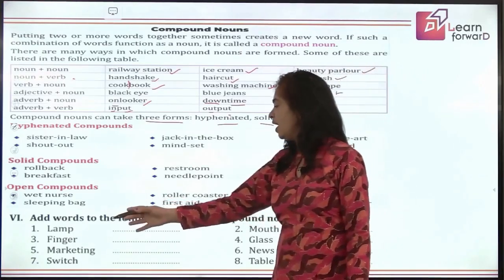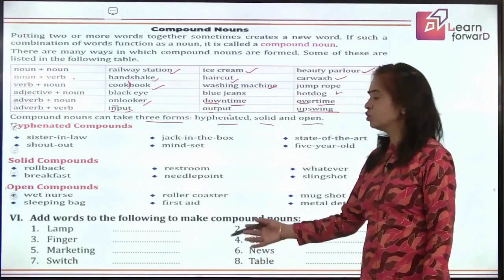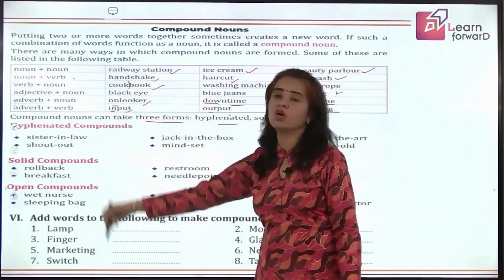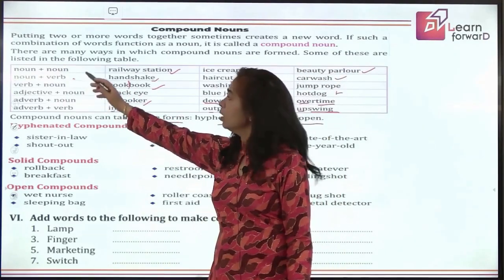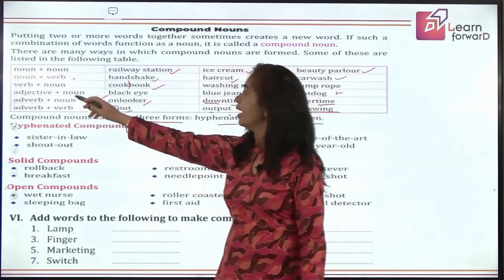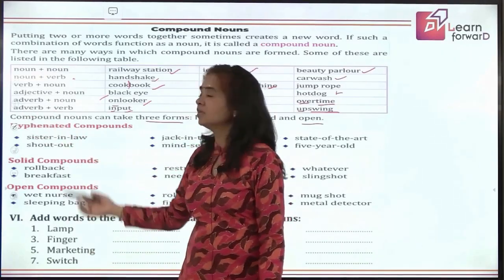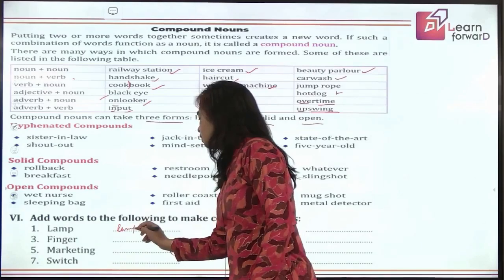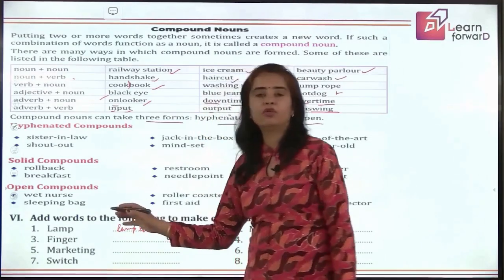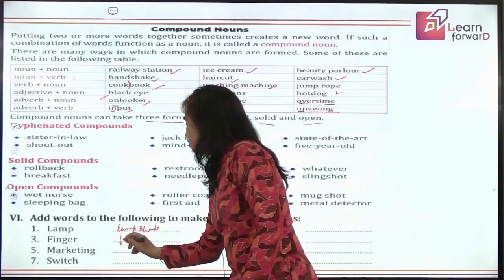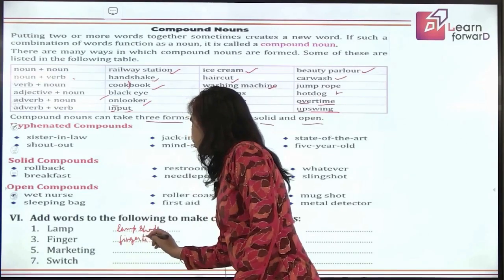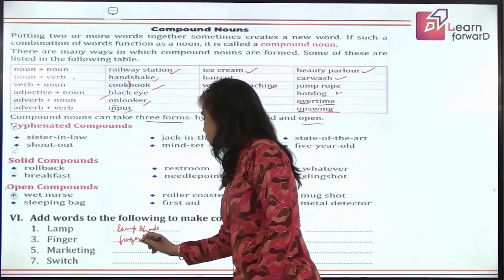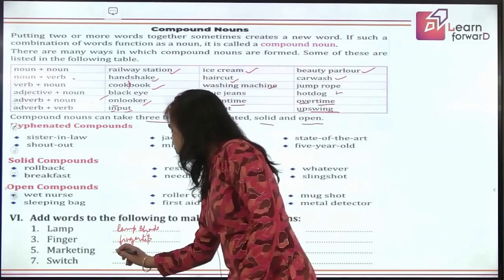As an exercise, add words to the following to make compound nouns: lamp, finger, marketing, switch, mouth, glass, news, table. You can add a noun, verb, adjective, or adverb before or after these words. For example, for 'lamp' I can say 'lampshade'. For 'finger' I can say 'fingertip' — we say 'it's on my fingertips' when we know something well. For 'marketing' there are so many words you can follow, like 'marketing manager'.